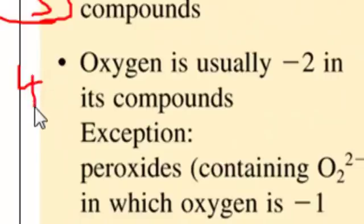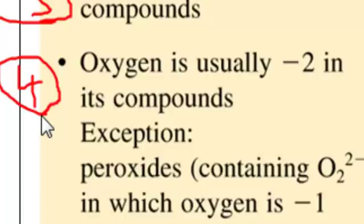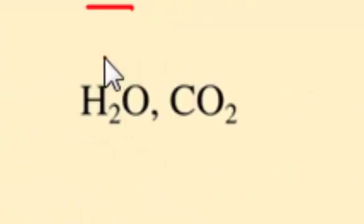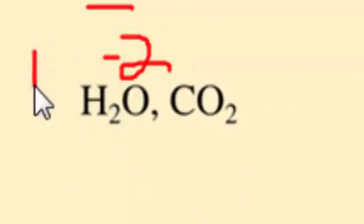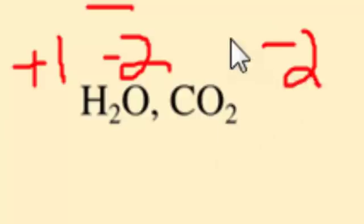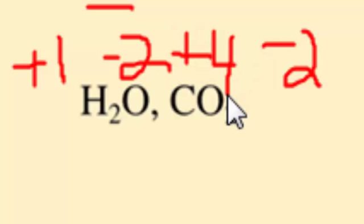Rule number four: oxygen is the second most electronegative element, so it gets second preference. Oxygen is usually negative two in a compound. The exception is when oxygen is in a peroxide such as H₂O₂. In water (H₂O), oxygen is minus two, so each hydrogen is plus one. In carbon dioxide (CO₂), oxygen is minus two; two oxygens times minus two equals negative four, so carbon must be plus four.